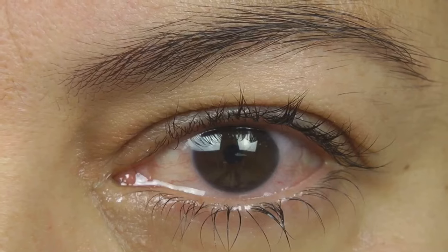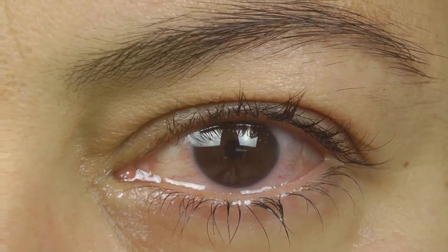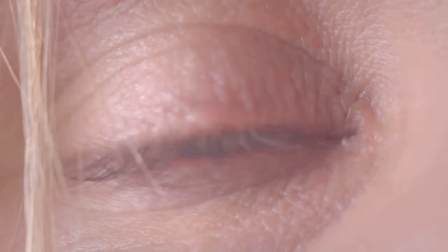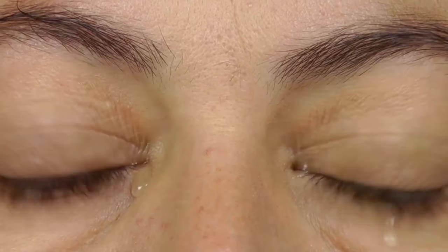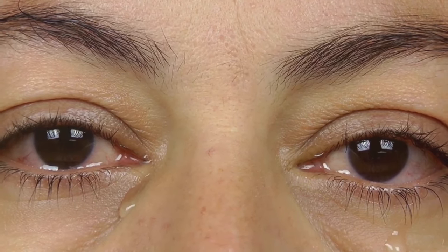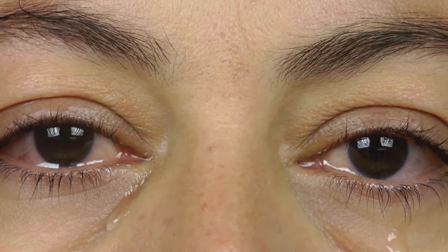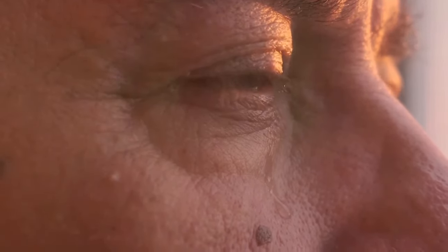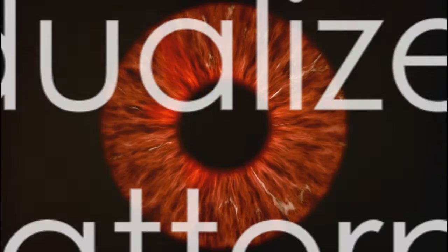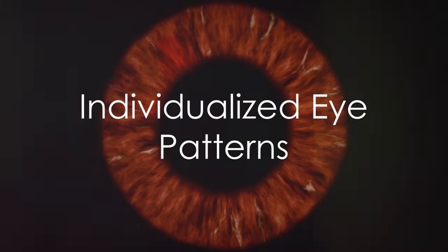Emotional tears contain a mix of stress hormones and other unique biochemical substances. This suggests a possible role in emotional regulation – it's as if our bodies are designed to cry out the stress. So the next time you find yourself shedding a tear or two during a heartfelt movie scene or a touching moment, remember – it's not just an emotional response, but a complex biochemical process. And it's a uniquely human experience that shows the depth of our emotions.